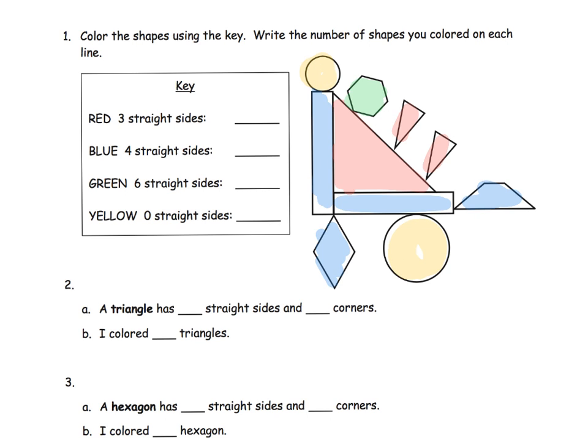And of course, then we would fill in our little answers. Three straight sides had three figures. Four straight sides had four figures. Six straight sides had one figure, just that one lowly hexagon right here. And then how about zero yellow straight sides? And of course that answer is two. We have two circles.